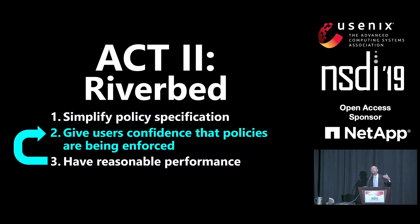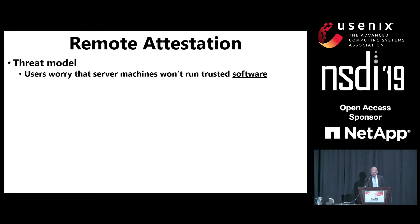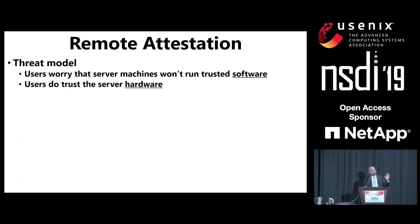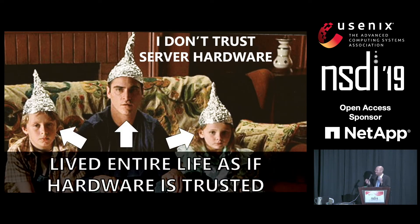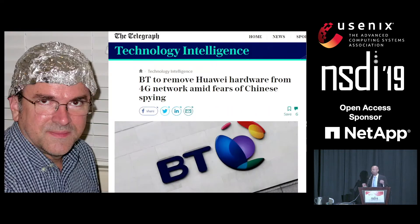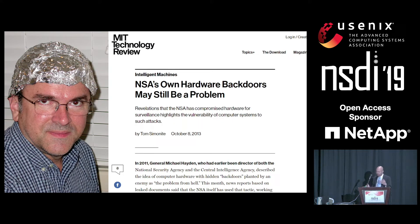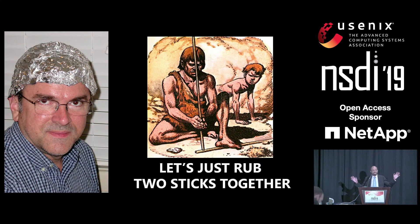Now let's discuss how Riverbed gives users confidence that policies are being enforced. We're going to use a technique called remote attestation. The threat model is that users worry that server machines won't run trusted software, like a taint-tracking Riverbed runtime. However, users do trust the server hardware. I can already hear you saying you don't trust server hardware — but at this point you've lived your entire life as if you trusted hardware. That said, you might not want to trust it. For example, the US government has accused Huawei of putting malicious circuitry in routers, which is deeply ironic because the NSA has also been accused of putting backdoors into hardware. For this talk, let's just assume that server hardware is trusted.